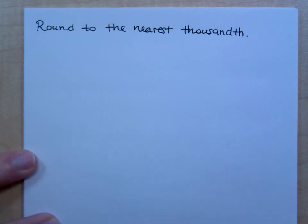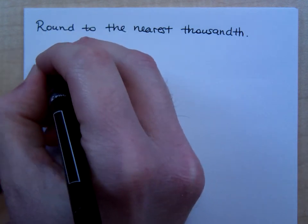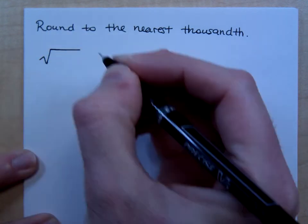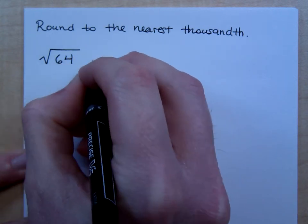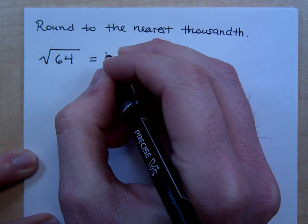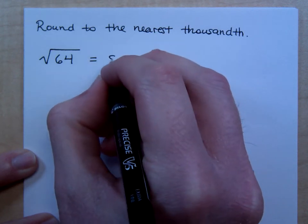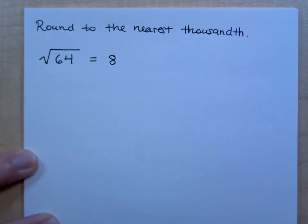Alright, so let me give you some problems where you have to round to the nearest thousandth, just so that we are understanding what we're doing here. Since the instructions here say round to the nearest thousandth, how would you round this to the nearest thousandth?